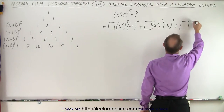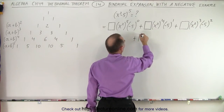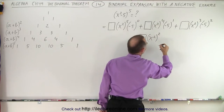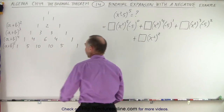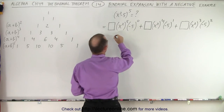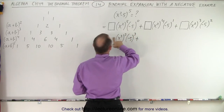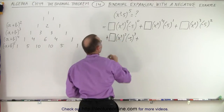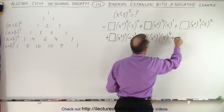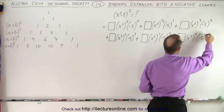I'm just going to write pluses because the negative sign will automatically take care of itself. That's the numerical coefficient of x squared to the third power and minus 5 quantity squared, plus the fourth numerical coefficient times x squared to the second power, plus x squared to the second power times minus 5 to the third power, plus the numerical coefficient times x squared to the first power times minus 5 to the fourth power, plus the numerical coefficient of x squared to the zero power times minus 5 to the fifth power.